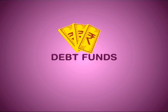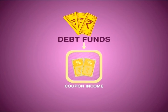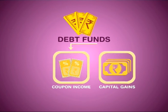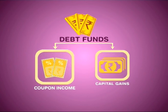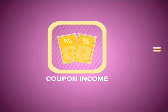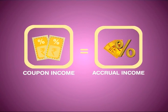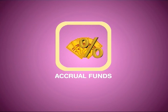Returns from debt funds have two components: coupon or interest income, and capital gains of underlying bonds. The coupon component is also called accrual income, and funds where this is predominant are generally referred to as accrual funds.